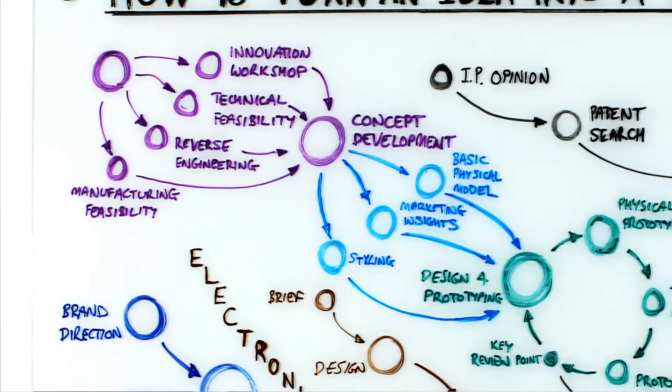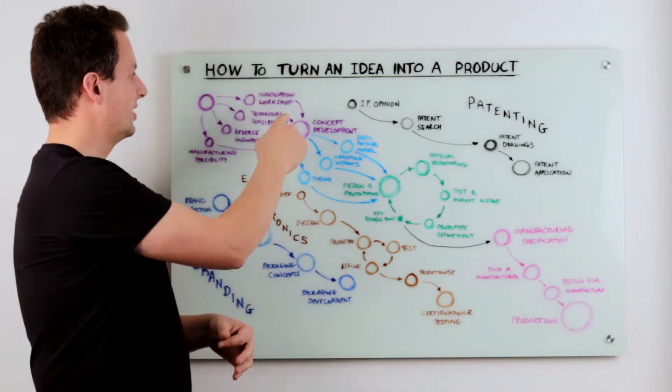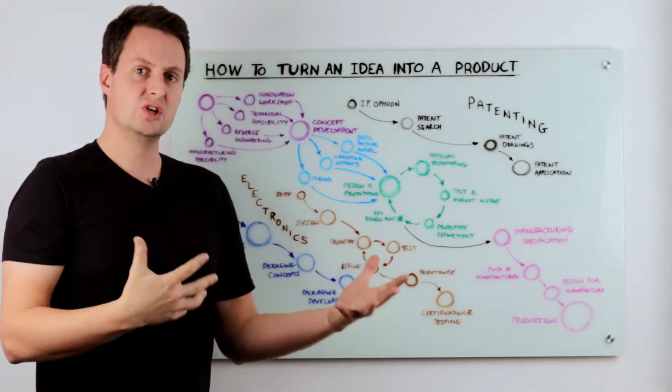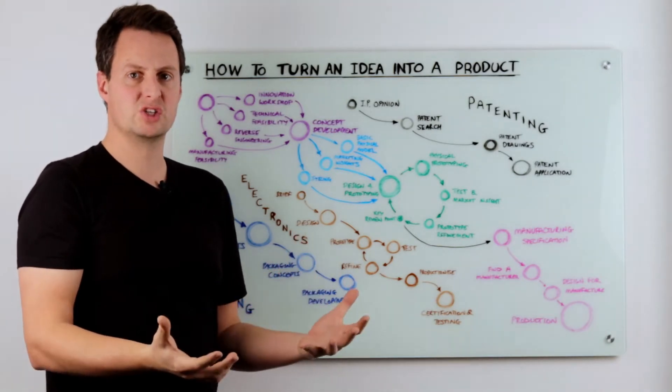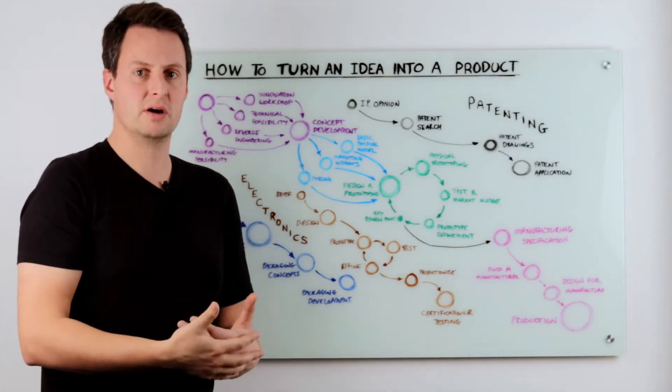Now the main things you're probably going to want to look at are technical feasibility if you don't know whether your idea is actually going to be possible. Reverse engineering if you've already got a product that you want to take apart and rework to improve from a margin, durability, or functionality perspective. I've got a whole other video on reverse engineering so check that out. Or it might be that manufacturing feasibility is critical. Finally, you might actually not know that the solution you're looking at is the right solution. You might want to do an innovation workshop with some creative designers to see what other options are there.